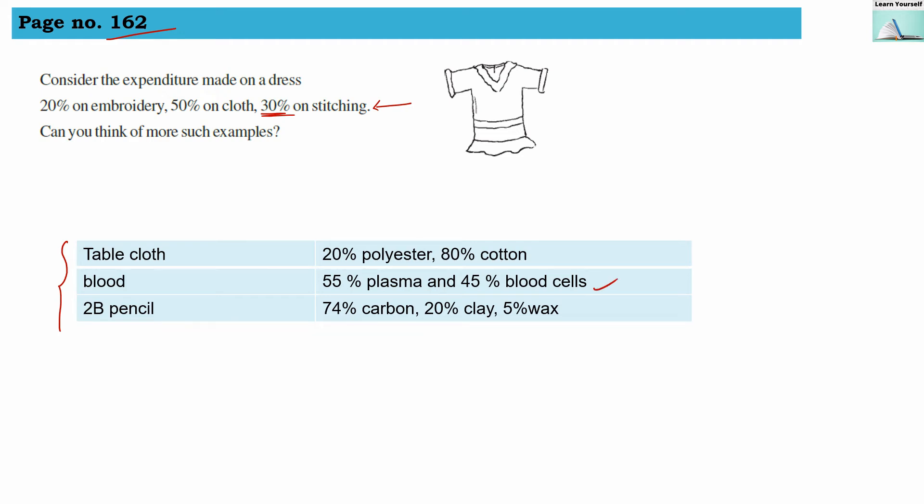And our 2B pencil's lead is made up of 74% carbon, 20% clay and 5% wax. So these are percentage comparisons. You can write your own examples.